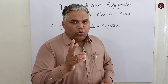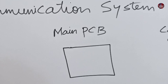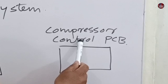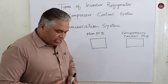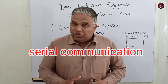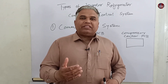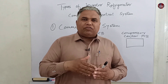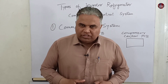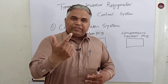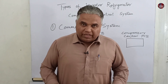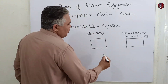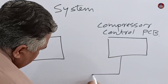Two control boards are used in these motherboards: one is the main control PCB and the other is the compressor control PCB. Wires are used to communicate between them. Serial communication is used mostly in these systems. Parallel systems are also available, but the downside is that a lot of wires are used — it is redundant. It is not necessary to use 50 wires for what can be done with one wire. Serial communication takes place over a single wire.